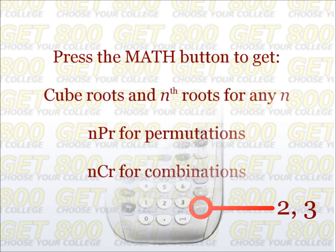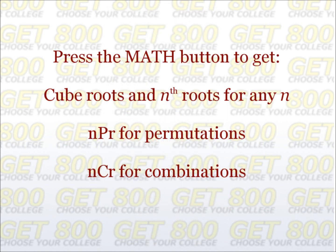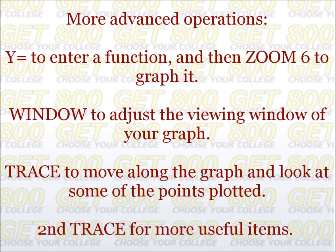If you press the MATH button on your calculator, you have several menus. In the first menu, you can take cube roots and nth roots for any n. If you scroll right to PRB, which stands for probability, you have buttons for permutations and combinations, labeled NPR and NCR. Those were the most useful items. I'm going to give you a few more that are not as important, but they can be useful in certain situations.